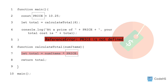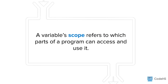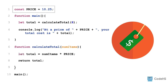This error has to do with variable scope. A variable scope refers to which parts of a program can access and use it. When price is declared outside of any function, our program works because price's scope is the entire program, meaning that we can access it anywhere.